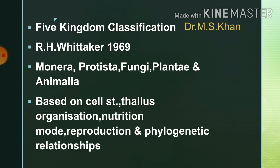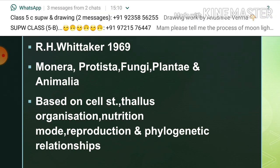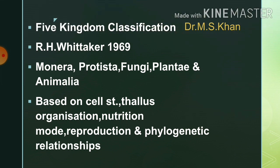To solve these problems, another scientist came — R.H. Whittaker. He proposed Five Kingdom Classification. R.H. Whittaker proposed Five Kingdom Classification in 1969. According to him, the five kingdoms are: Monera, Protista, Fungi, Plantae, and Animalia. This classification was based on cell structure, thallus organization, mode of nutrition, reproduction, and phylogenetic relationship — i.e., how organisms relate to their ancestors.